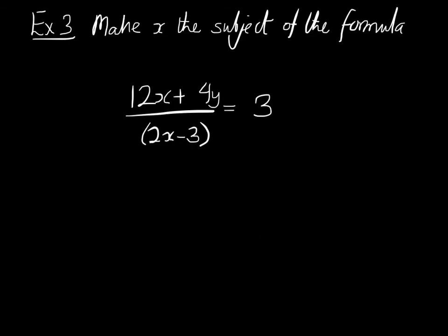Now in this question, we want to make x the subject of the formula. You'll notice that there is an x here and an x here. So there are 12x's on the numerator of the fraction and 2x's on the denominator of the fraction. So we want to collect all the x's together and make x the subject. So why don't we multiply both sides of this equation by 2x subtract 3. And then we would get that 12x plus 4y is going to be 3 multiplied by 2x subtract 3. If we multiply both sides by 2x subtract 3, effectively you cancel the 2x subtract 3 off the denominator. And on the right hand side, you get 3 multiplied by 2x minus 3.